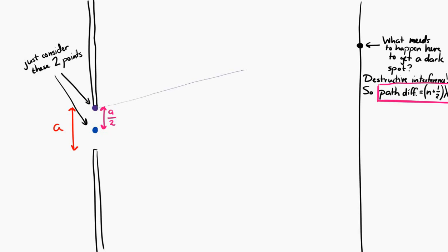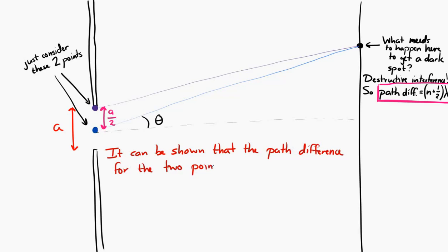And I'm going to go ahead and I'm going to draw in an angle theta here, just because it might be useful. And it's a little tough to show, and I'm not going to go through all of the geometry, but if I chose two points that are a over 2 apart, the path difference between those two points is going to equal a over 2 sine theta. Now again, I'm not going to go through a full geometric proof of that, so you just have to believe me. But in this situation, the path difference is a over 2 sine theta.